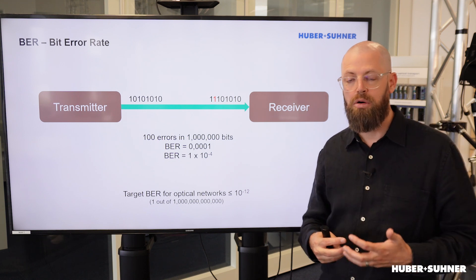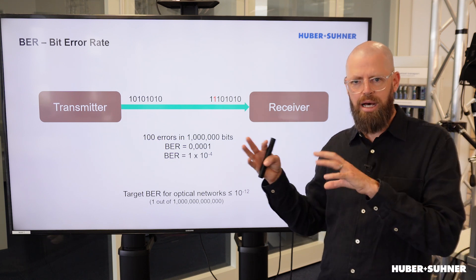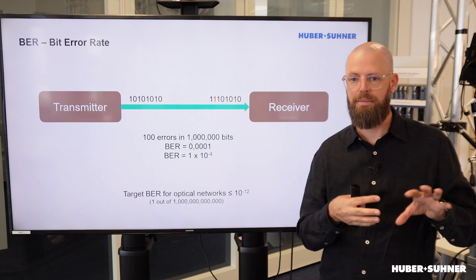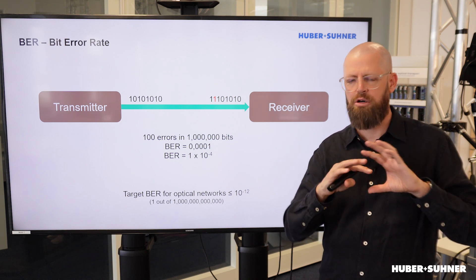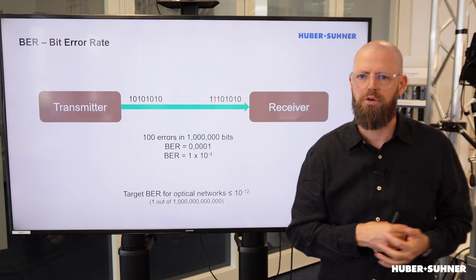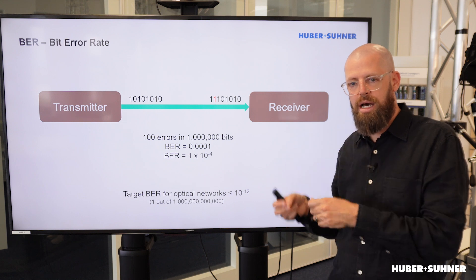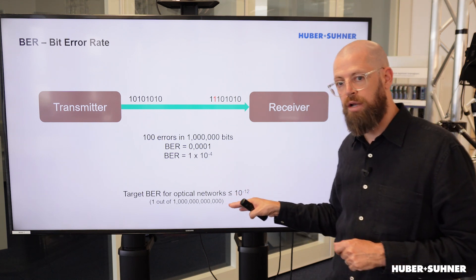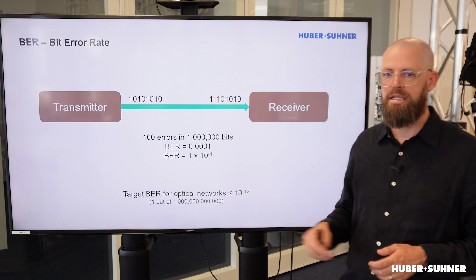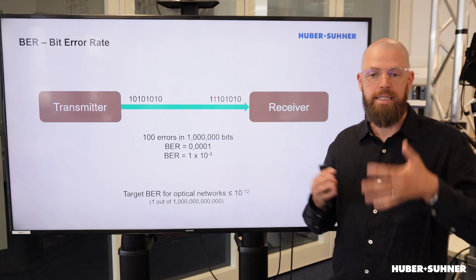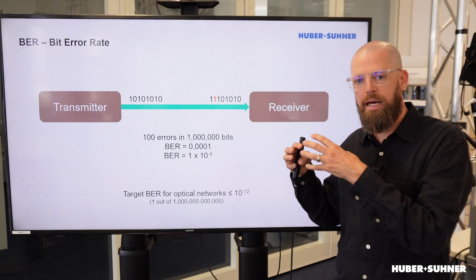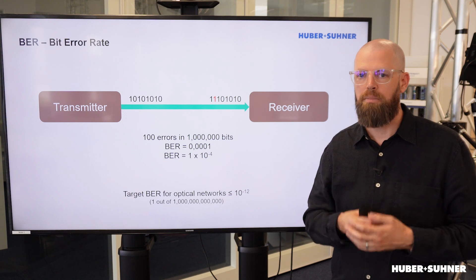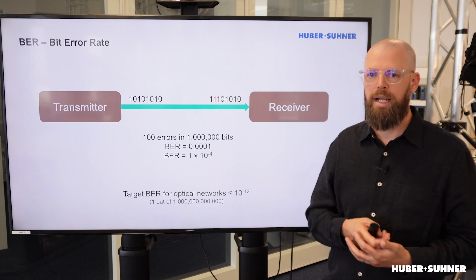In optical networks, depending a little bit on the type of transceiver standard, after forward error correction we target a bit error rate of equal to or less than 10 to the negative 12. And that means less than or equal to one error per 1 trillion bits.